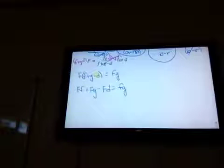So I distribute. And I have ff plus fg minus fd equals fg. This reminds me of my Dr. Seuss book. Big a, little a. What begins with a? Aunt Danny's alligator, a, a, a. Big b, little b. What begins with b? Barber baby bubbles and a bumble bee. Big c, little c. What begins with c? Camel on a ceiling, c, c, c.